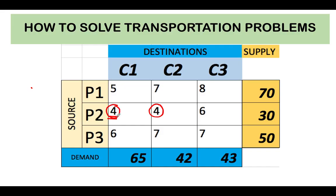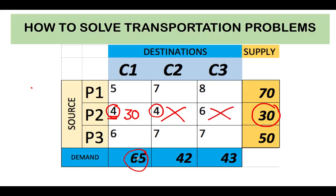We want to allocate first to this cell because the cost of transporting goods here is the lowest, and we want to maximize the amount of goods allocated to destination C1. The total demand is 65, and the total supply from P2 is 30 units. We select whichever is smallest — 30 is smaller than 65 — so we allocate all 30 items to this cell, using up all the supply from plant number two. Since there's a demand of 65 and we fulfilled 30, we still need 35 more items for customer C1.